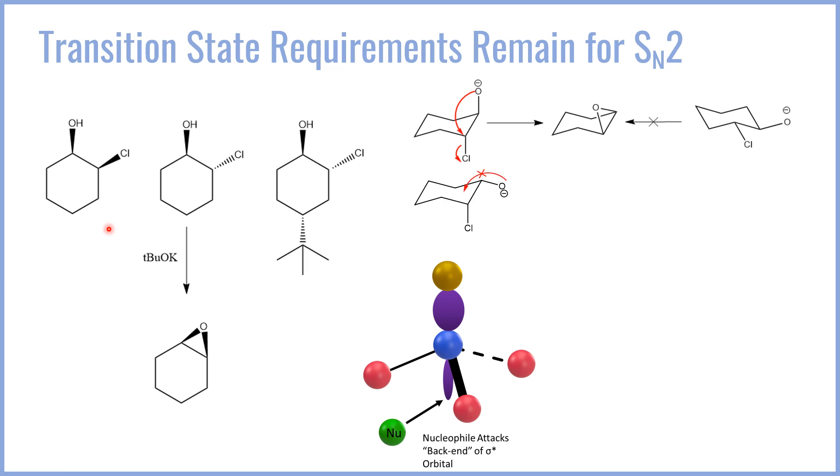Conversely, if we look at the cis species, where the O and the Cl are cis to one another, this always results in one of the groups being axial and the other one being equatorial. When this is the case, the oxygen can never find the backside of the chlorine orbital, because either the chlorine is equatorial and the oxygen axial, or vice versa. The O can never find the backside of this orbital, and the SN2 process is completely hindered. This does not react, which is why you do not form the epoxide from the cis species.